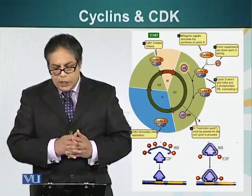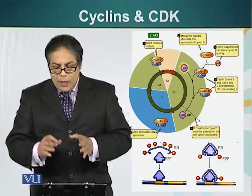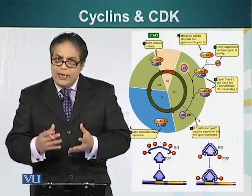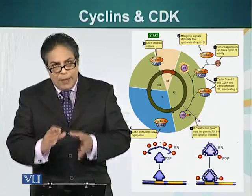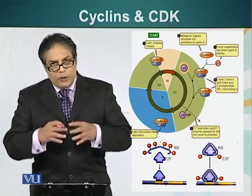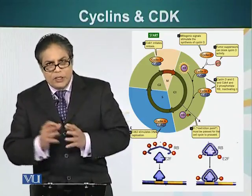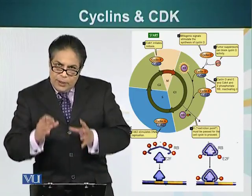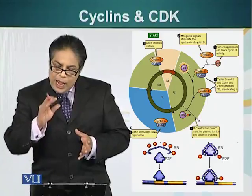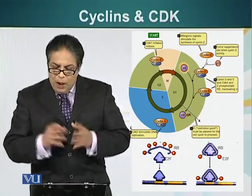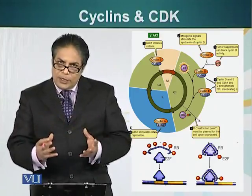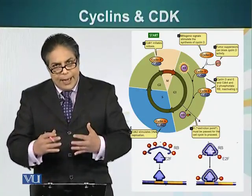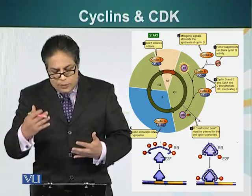There is also a protein called P21, which is very important. This protein senses DNA damage — if the cell's DNA has been damaged, you don't want to make a copy of it, because both resulting daughter cells would have damaged DNA and would not function properly. As long as the DNA is intact, P21 will not be produced and will not inhibit cyclin D and cyclin E functions. Other proteins in the cell monitor DNA integrity, and if the DNA is intact, the cell will be allowed to proceed into S phase.